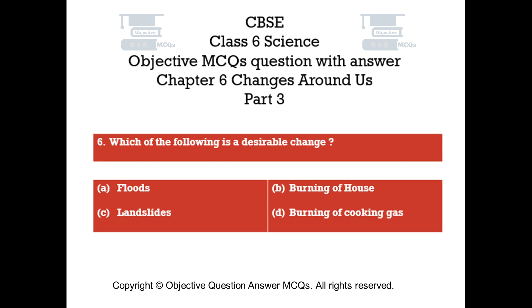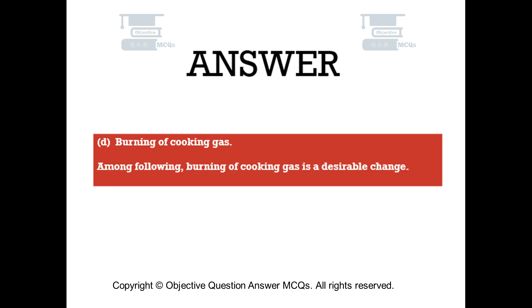Question number 6. Which of the following is a desirable change? Option A, floods. Option B, burning of house. Option C, landslides. Option D, burning of cooking gas. The right answer is option D — burning of cooking gas is a desirable change.